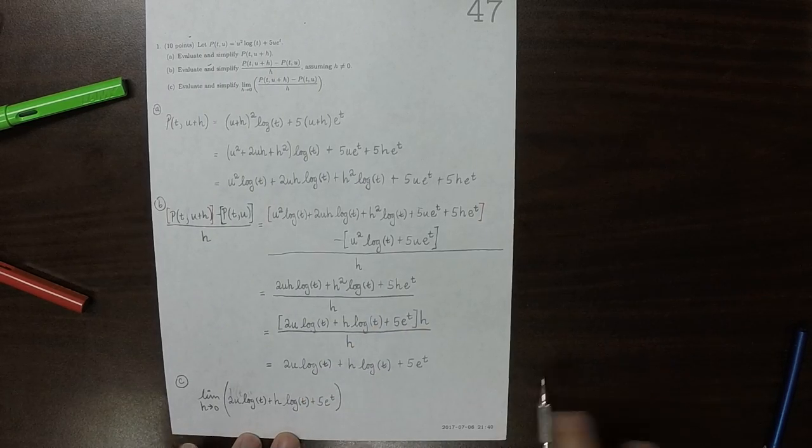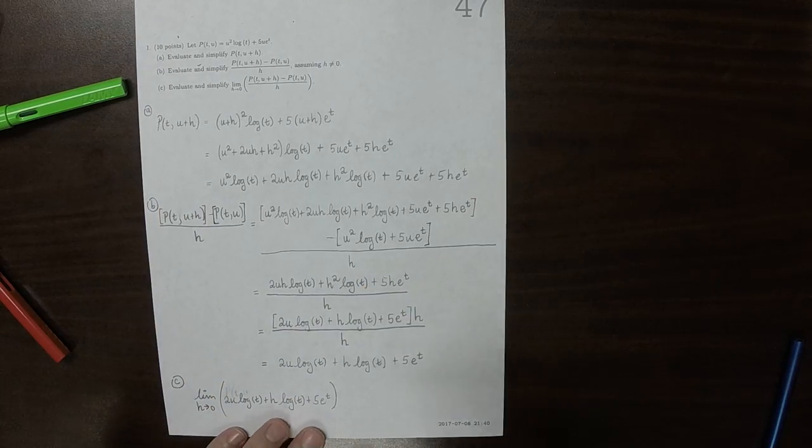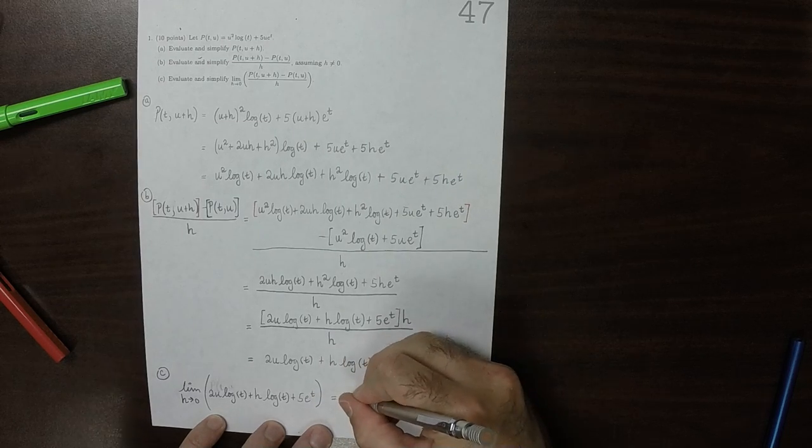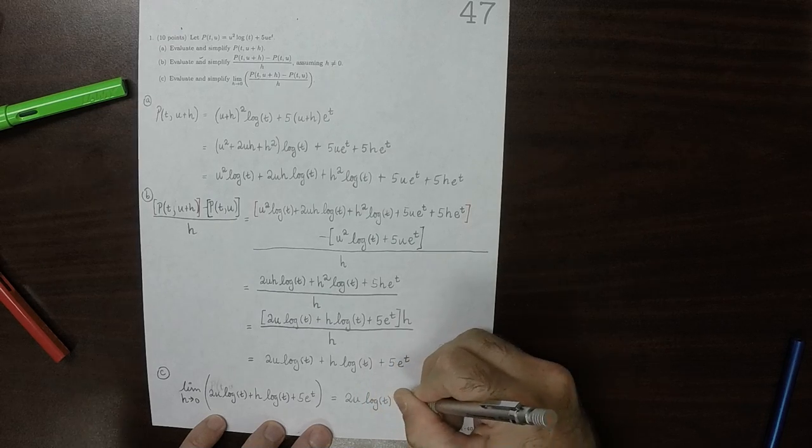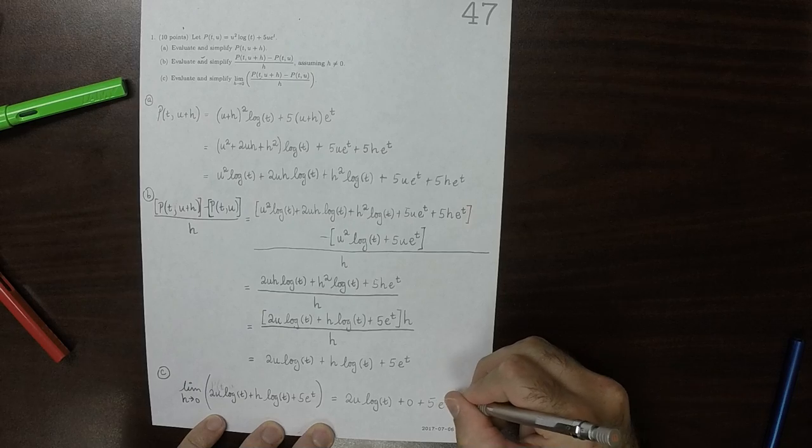Well, the first and the last term have no h's, so they're constant, so their limit is themselves. And then the limit of the middle term goes to 0. So the answer is 2u log t plus 0 plus 5 exponential t.